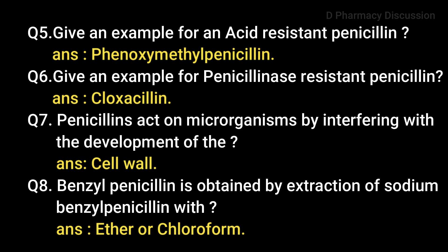Question 7: Penicillins act on microorganisms by interfering with the development of — answer: cell wall. Question 8: Benzyl penicillin is obtained by the extraction of sodium benzyl penicillin with — answer: ether or chloroform.